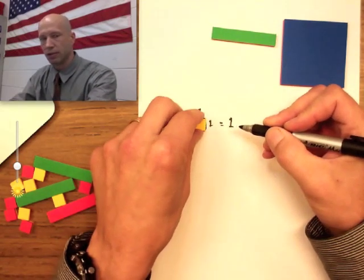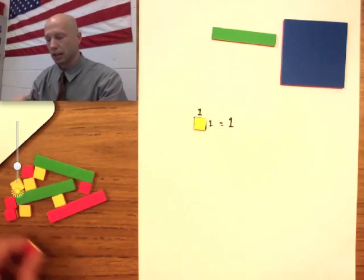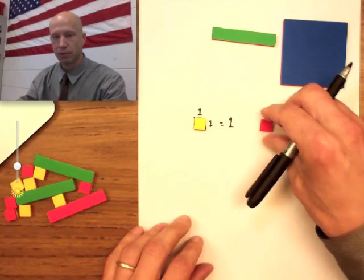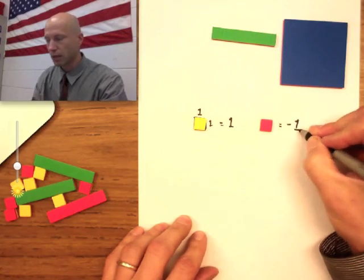So from now on, we're going to use this little yellow square to represent one. And as I said earlier, a red one will be negative one.